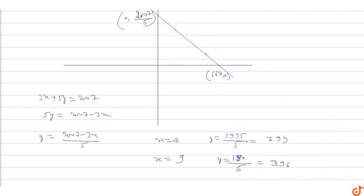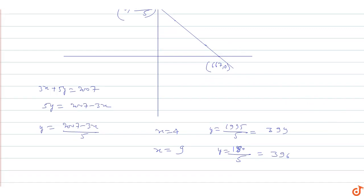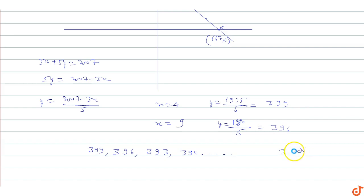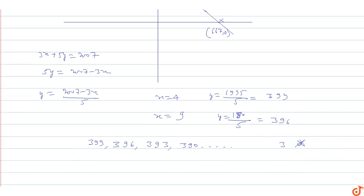The y-values are 399, 396, 393, 390, ... decreasing by 3 each time. The last valid value must be y = 3 (since y = 0 is on the coordinate axis and not to be considered). At y = 3, x = (2007 - 15) / 3 = 1992 / 3 = 664, which is valid. So last term is 3.